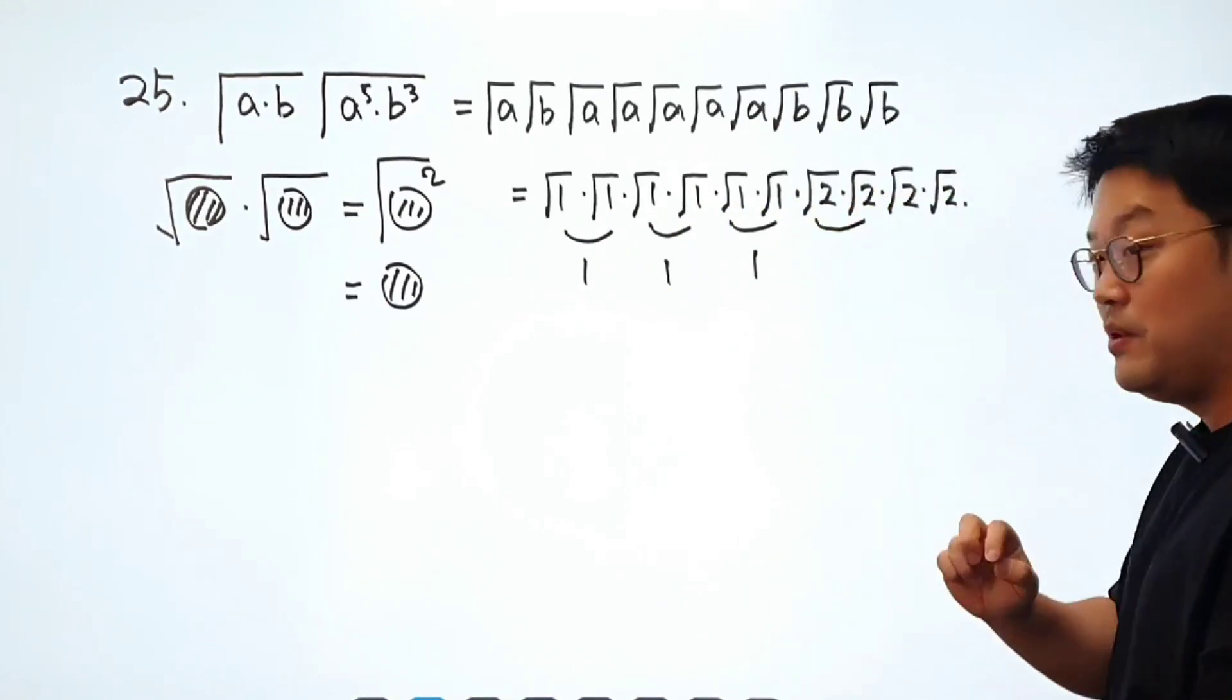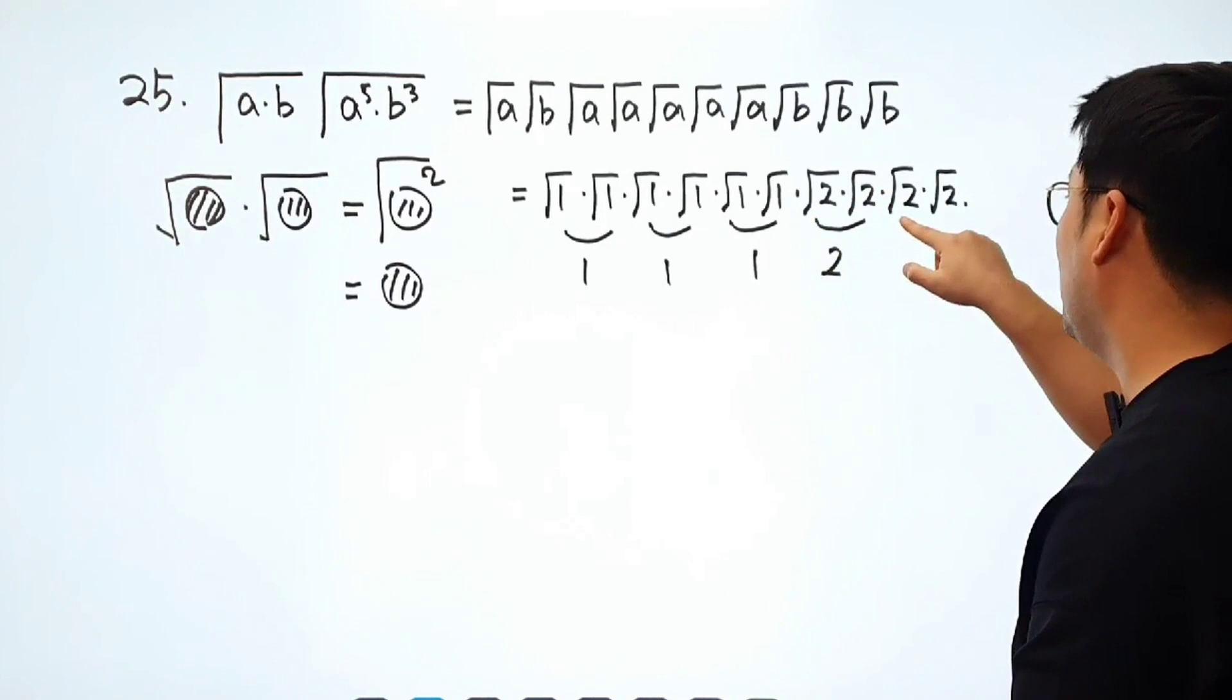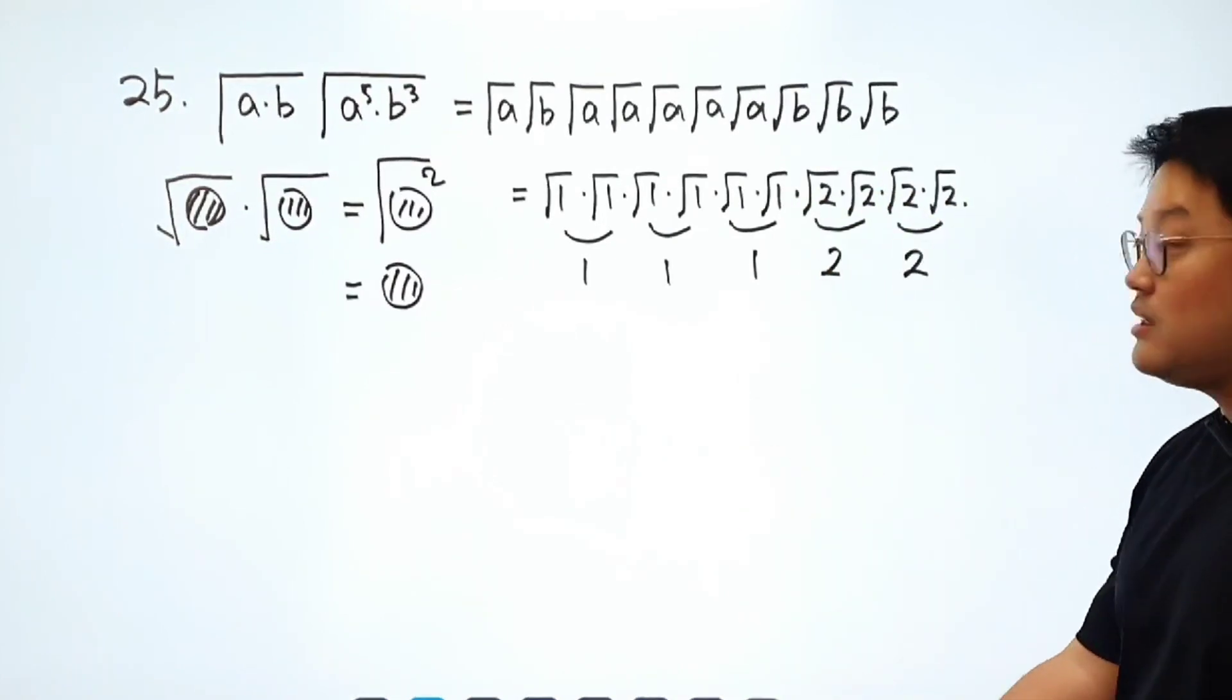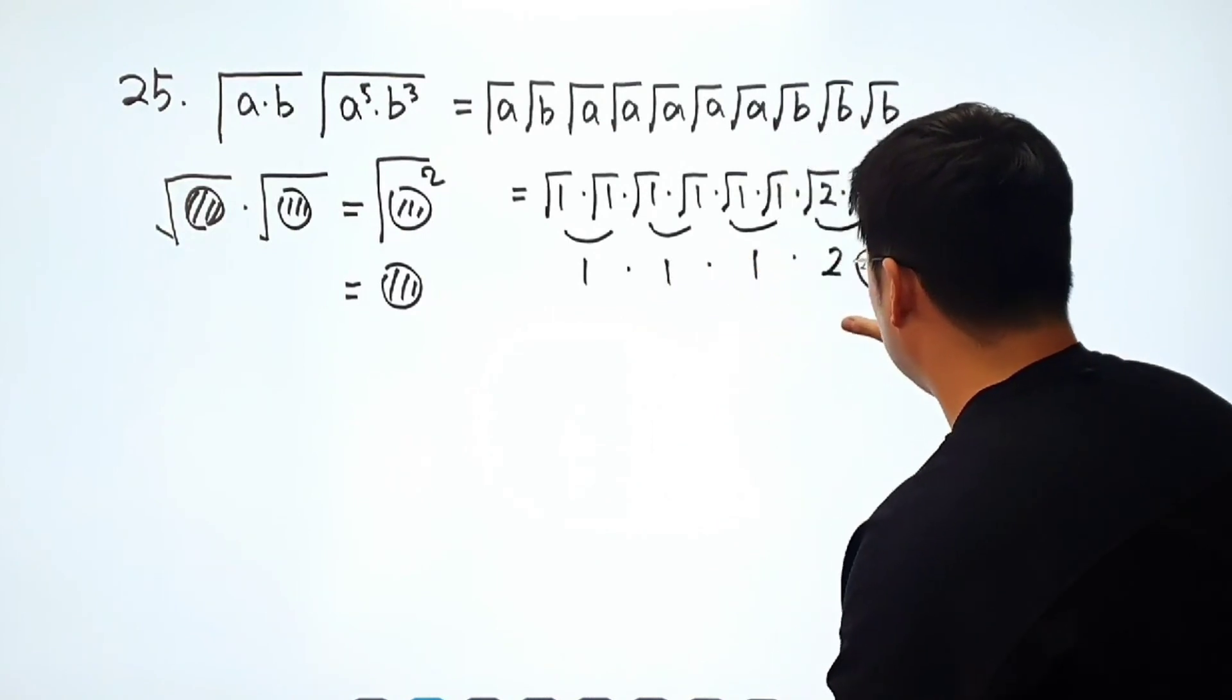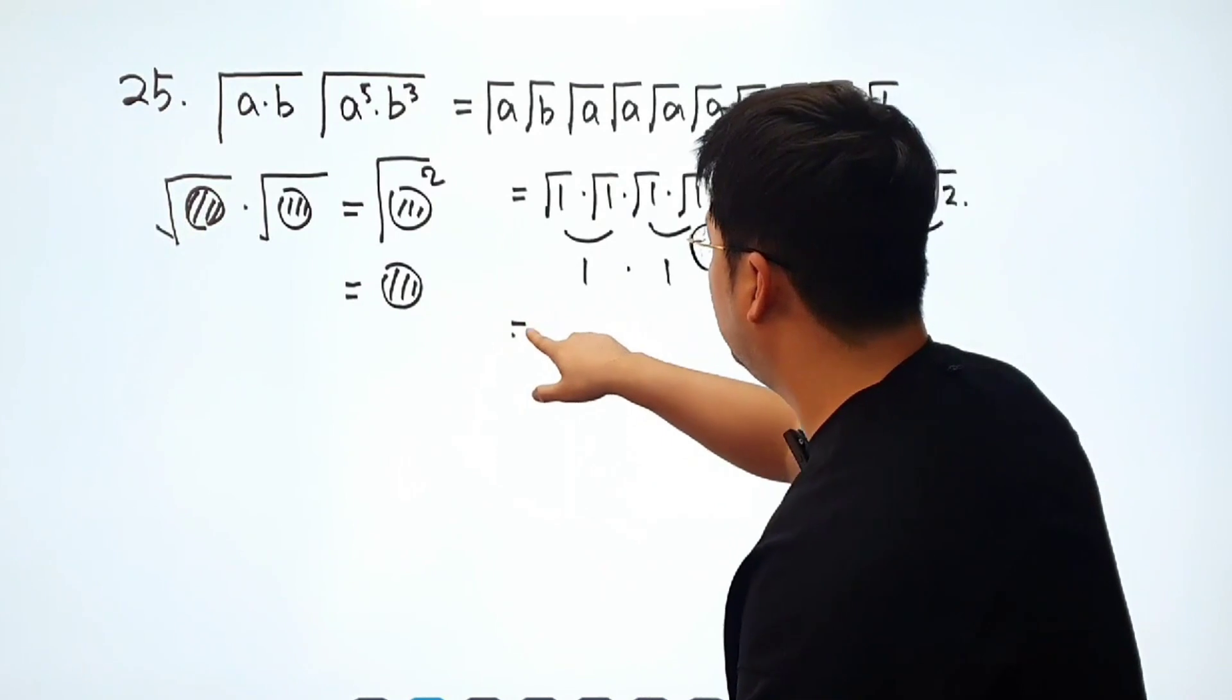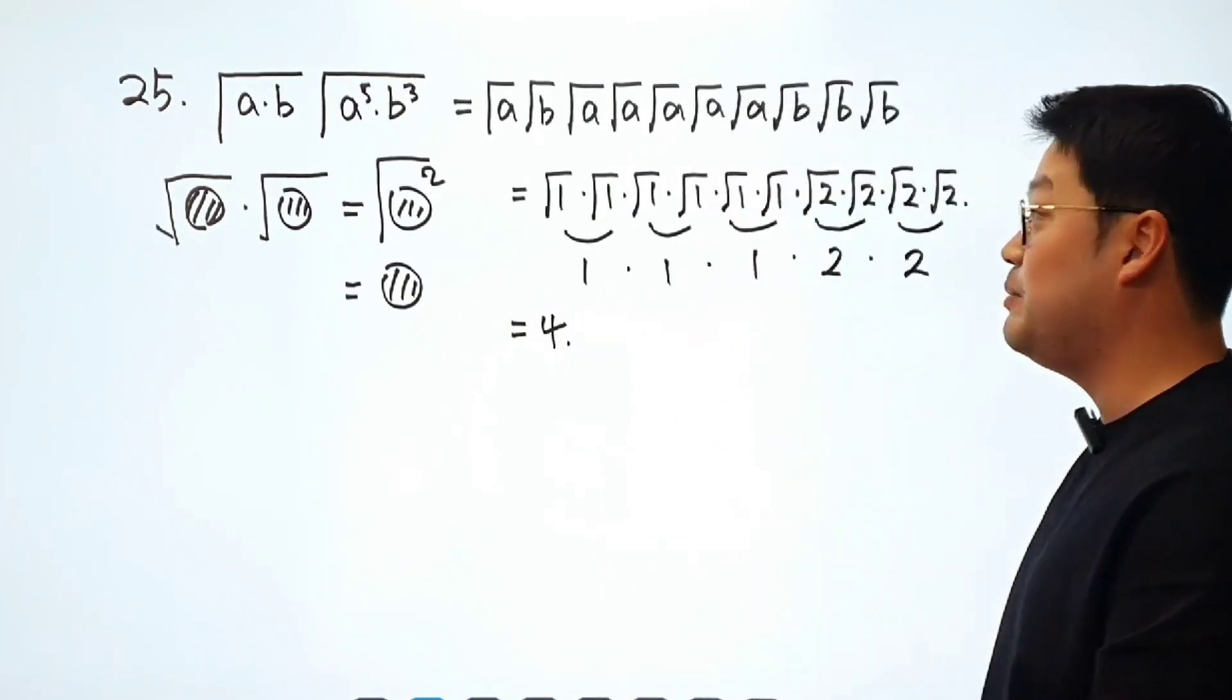And what about rad two times rad two? That becomes two. And this also becomes two because it's going to burst into integers. We get lots of nice looking integers and we multiply those numbers out. One times one times one and two times two, we end up getting four. And that is going to be the answer.